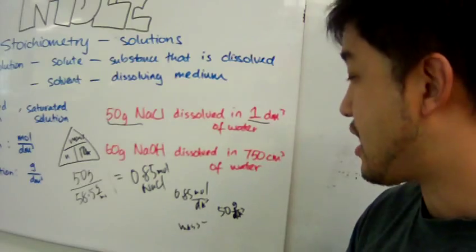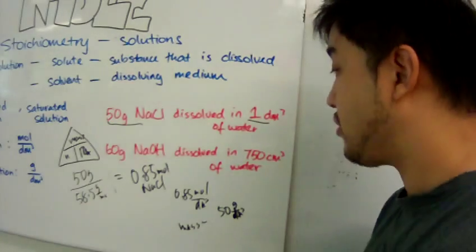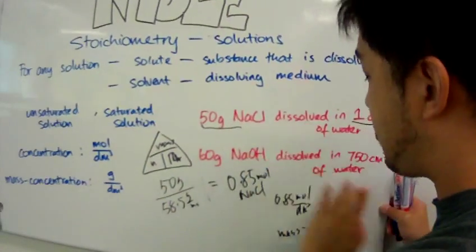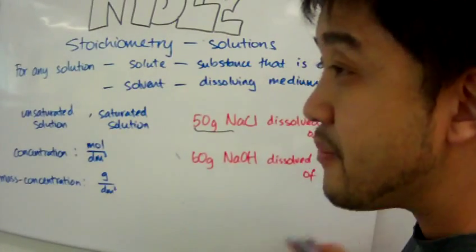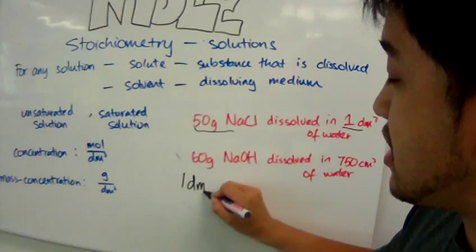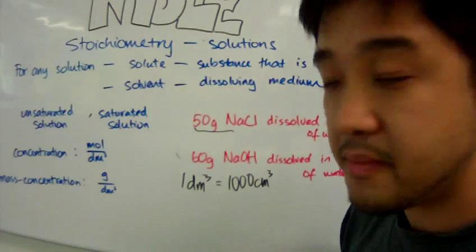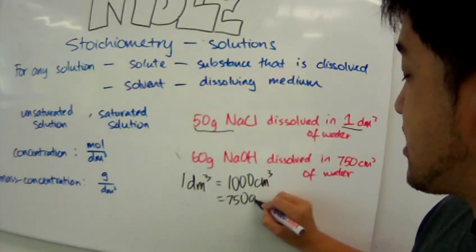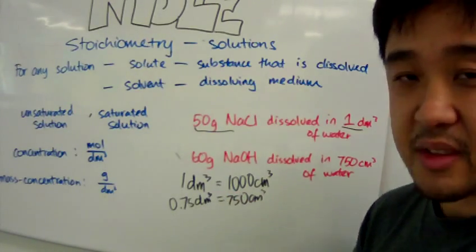For the second example: 60 grams of sodium hydroxide is dissolved in 750 cubic centimetres of water. Now we're dealing with cubic centimetres, but our equations use cubic decimetres. The relationship is: 1 cubic decimetre equals 1,000 cubic centimetres. So 750 cubic centimetres equals 0.75 cubic decimetres.